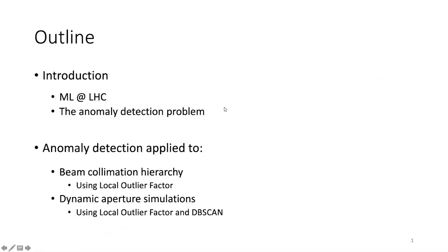This is an outline of what I'll be talking about. First, I'll review in a single slide a few of the activities investigating the use of machine learning for different problems in the LHC. Then I'll go into detail on the anomaly detection problem and describe two unsupervised learning algorithms: local outlier factor and DBSCAN.